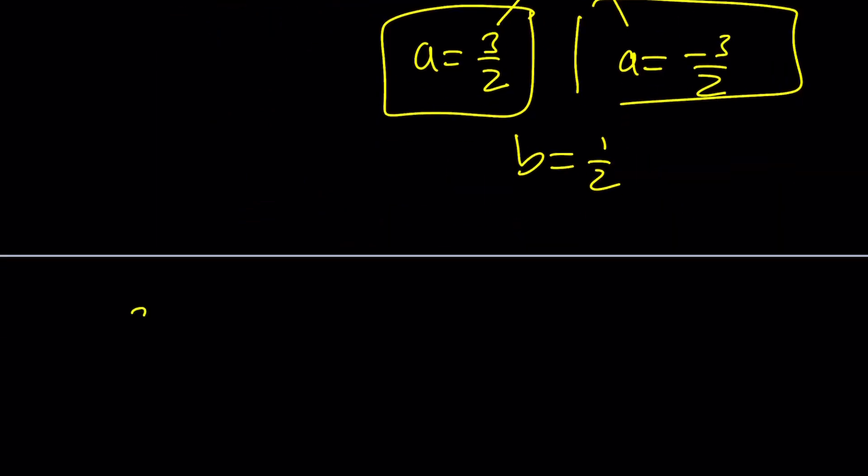Therefore, since our number was written as a plus bi, our numbers or solutions are just going to be 3 halves plus 1 half of i or negative 3 halves plus 1 half i. And this brings us to the end of this video.